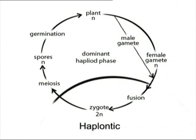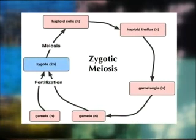This is not a true alternation of generation. This life cycle is characterized by a very long and dominant haploid gametophytic phase and a brief diploid zygotic phase. This cycle is also characterized by the occurrence of zygotic meiosis.